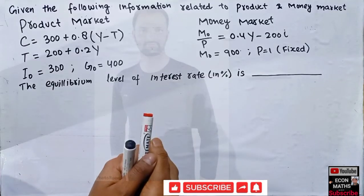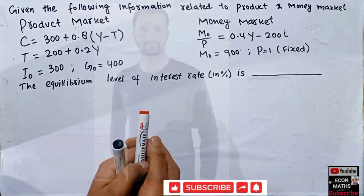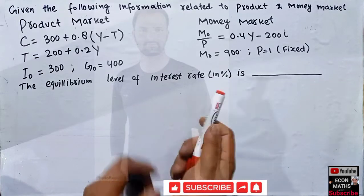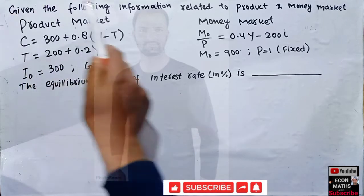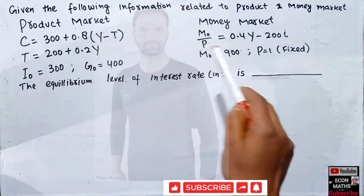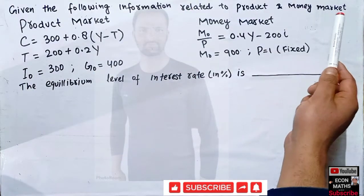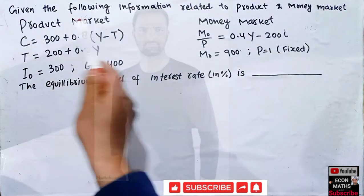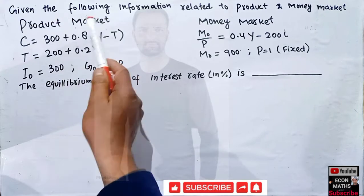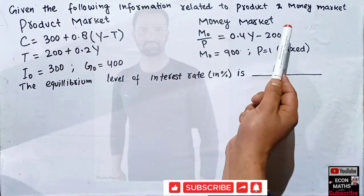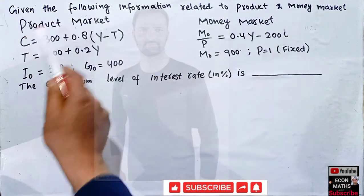Let us solve another question that was asked in the JM Economics paper of 2022. The question provides the following information related to the product market and money market.